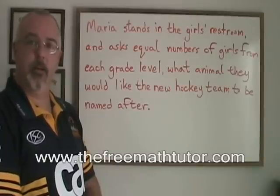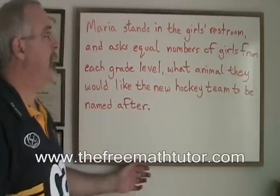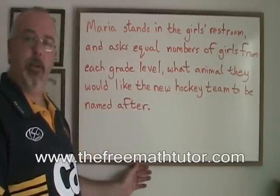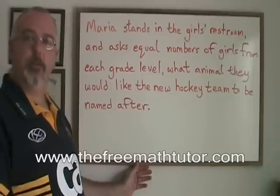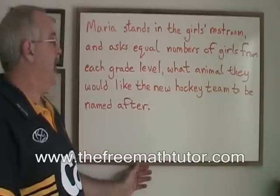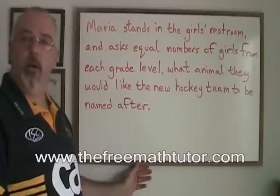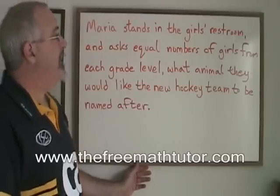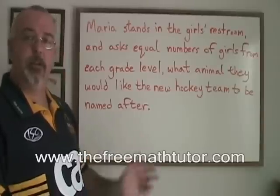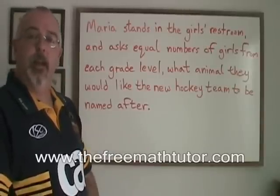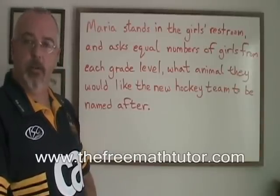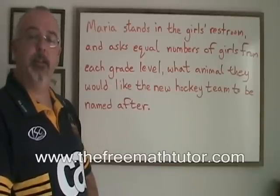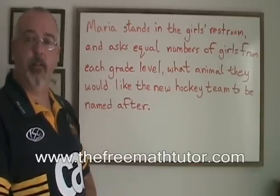Another student asked to conduct a survey is Maria. Maria stands in the girls' restroom and makes sure to ask equal numbers of girls from each grade level the question: what animal would they like the new hockey team to be named after? But Maria has introduced bias because she's only asking girls, and this decision should be made by all students in the school, both boys and girls. This is another form of data collection error.